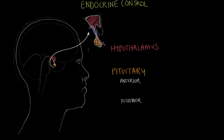That would be an example of a paracrine signal, or a really regionally acting signal. One example of hypothalamus hormones that signal the pituitary gland is gonadotropin-releasing hormone, or GnRH. Gonadotropin-releasing hormone goes down to the anterior pituitary and stimulates the release of follicle-stimulating hormone and luteinizing hormone — FSH and LH. These hormones travel down to the gonads: in the male, the testes, and in the female, the ovaries, and they stimulate the gonads to release their hormones.